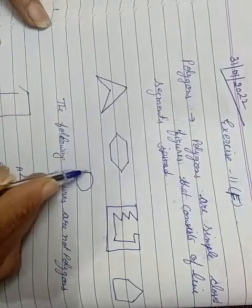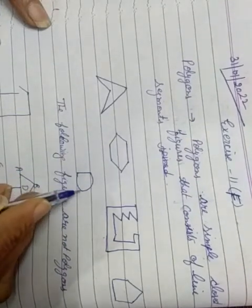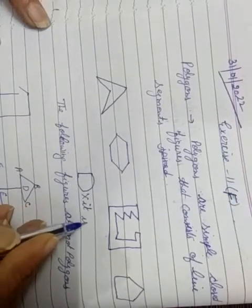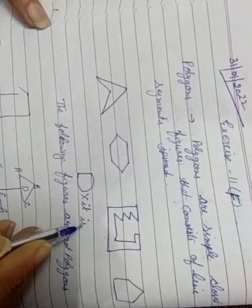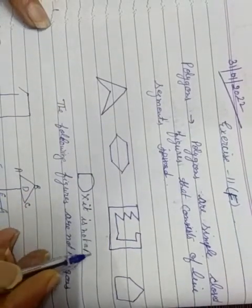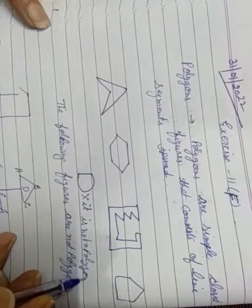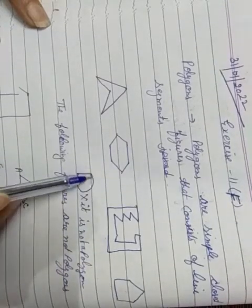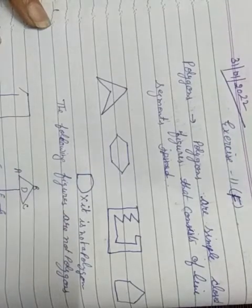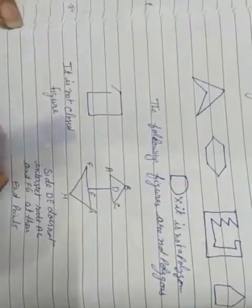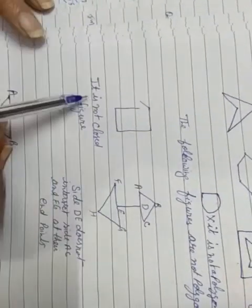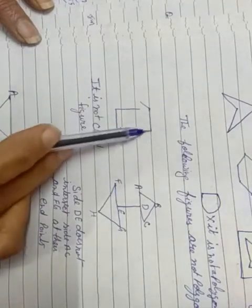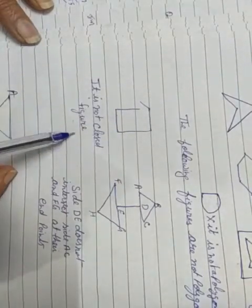This is not a polygon. It is not a polygon because it is not made by line segments — it is made by curves and line segments. These figures are also not polygons. This figure is not closed, so it is not a polygon.